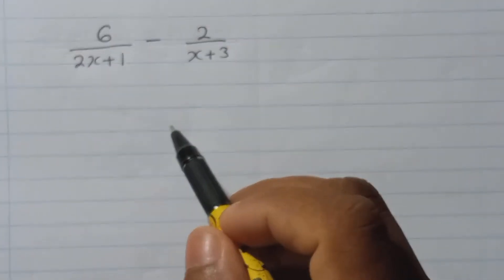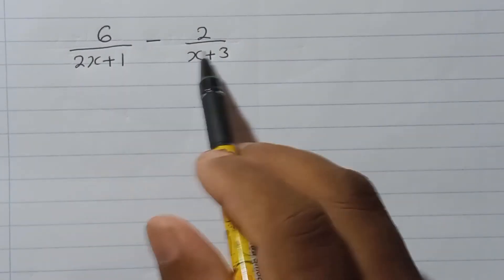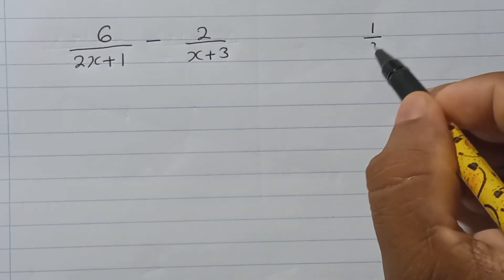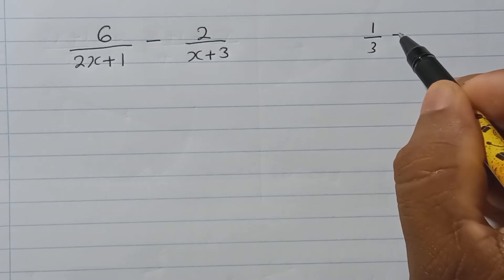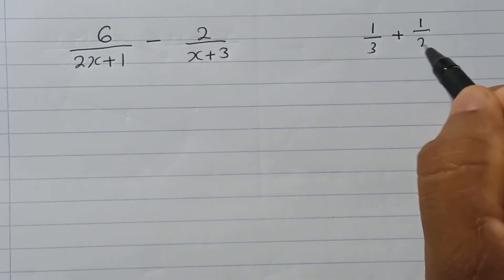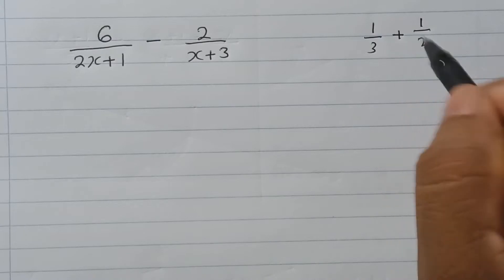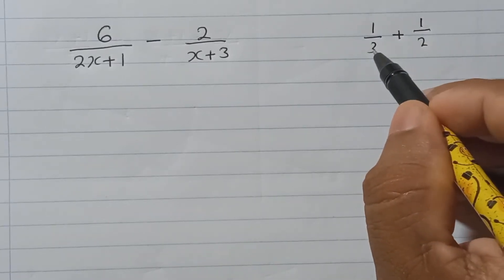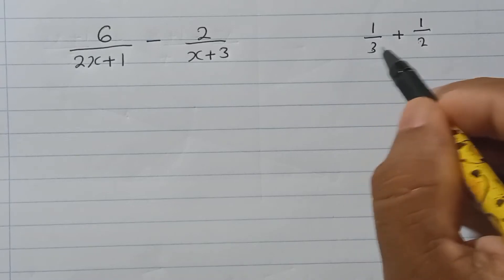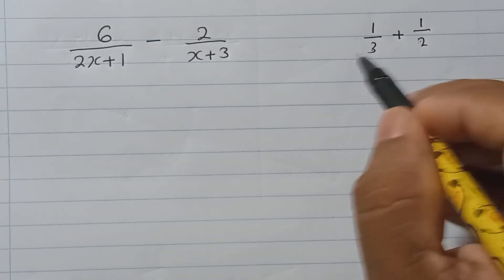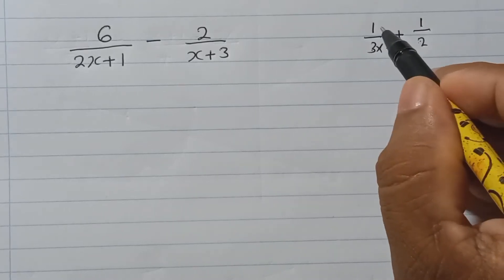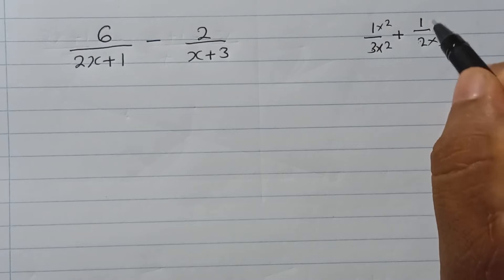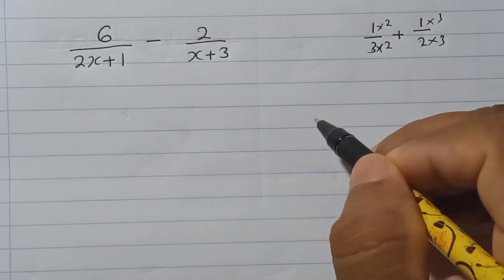Think about how to do this question — this is an algebraic fraction. You can think of it like a normal numeric fraction. When we have fractions like this, we make the same denominator. To get the same denominator, we multiply by the LCM. So I multiply by 2 here, and also by 2 there; I multiply by 3 here, and also by 3 there — now both denominators are 6.